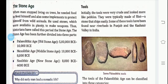When man stopped living on trees, he needed food to feed himself and also some implements to protect himself from wild animals. He used stones, which were available in plenty, to make weapons. Thus historians have called this period the Stone Age. The Stone Age has been further divided into three parts. The first one is the Paleolithic Age, which we can also call the Old Stone Age.